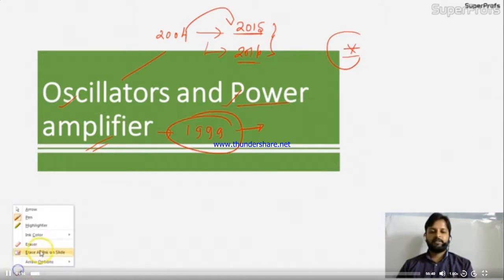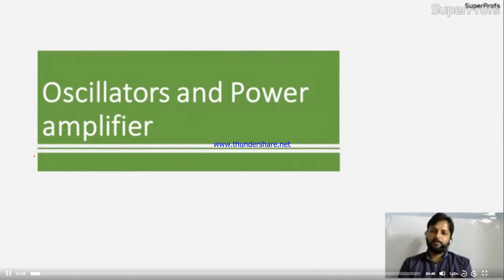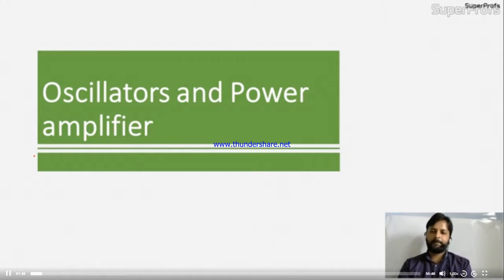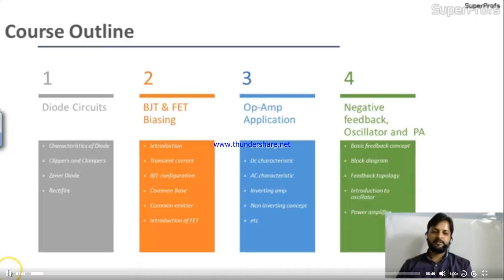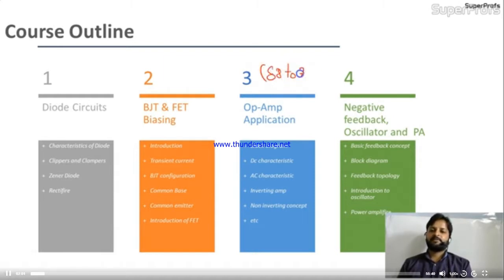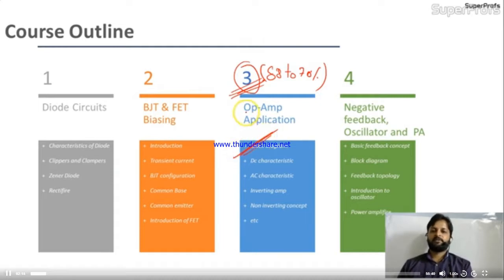In the third unit on operational amplifiers, we discussed many problems — op-amp with BJT, with diodes, Zener diodes, simple diodes, input offset, CMRR, and slew rate. The most important unit among all is operational amplifier. If you observe last year's GATE questions, you will find that 68% to 70% of questions are asked from operational amplifiers only. Definitely 2 or 3 questions will come from this topic.